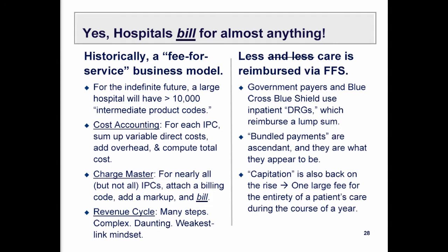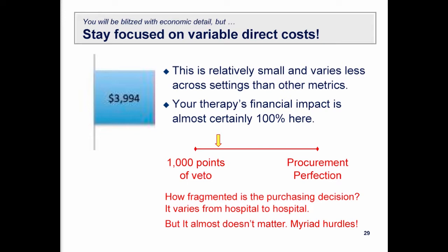There are a thousand points of veto. A colleague who was a surgeon at the University of Michigan health system would say everywhere you turn, somebody can block any initiative. Often it's because the whole process of getting reimbursed, getting it stocked, getting it dispensed involves so many different people. The revenue cycle is so complicated — miss one link and you don't get paid, and there are dozens and dozens of links.